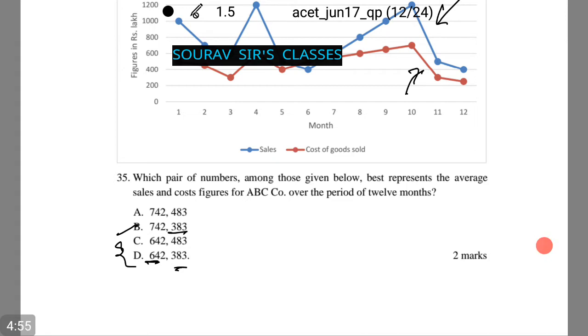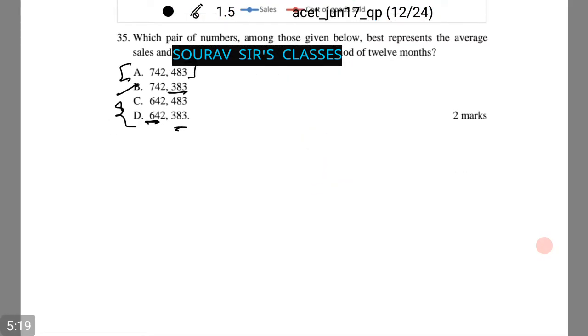Now with this we are left with option number A. Option number A has 742 as the average sales and 483 as the average cost, which are the best values among the given options so that it is not offset by the marginally smaller values. Let's see our next question.